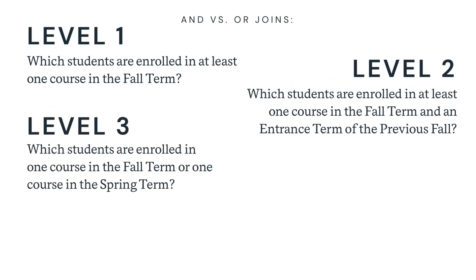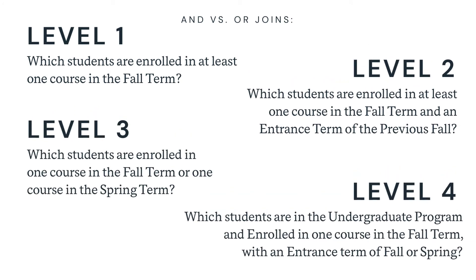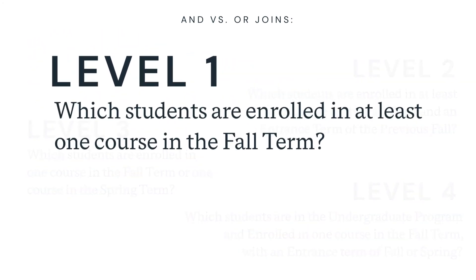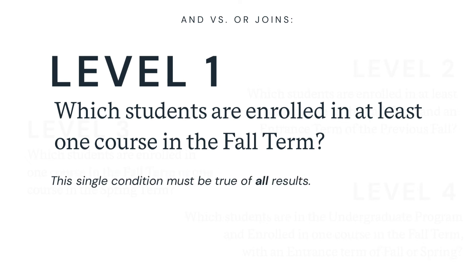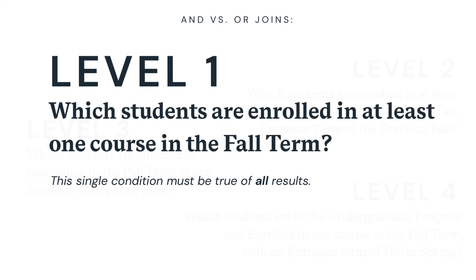In a subsequent video, we'll cover how to actually create conditions at these various levels. But right now, we want to focus on the hinge concept that allows you to ask those various levels of questions. At level one, with a single condition looking at a single bit of data on a profile, it's obvious that this condition has to be true of all results. If we ask which students show an enrollment in at least one course in the fall term, all students on the list of results will have an enrollment in at least one course in the fall term.